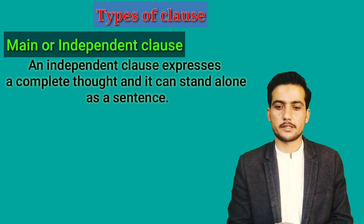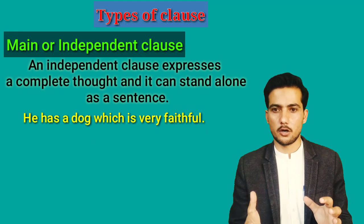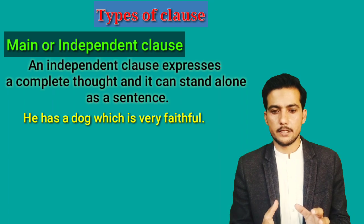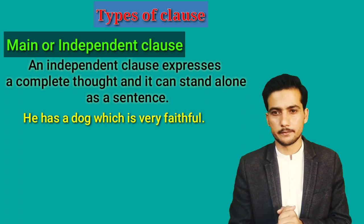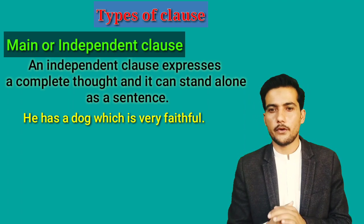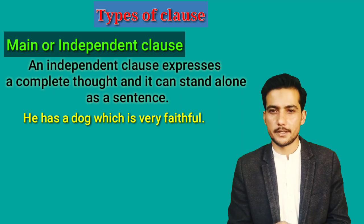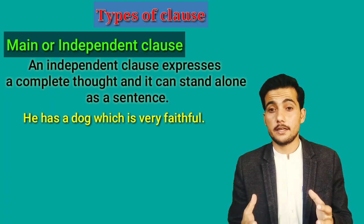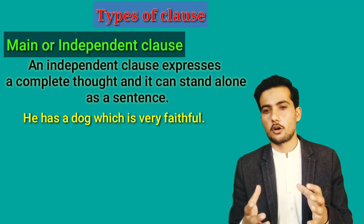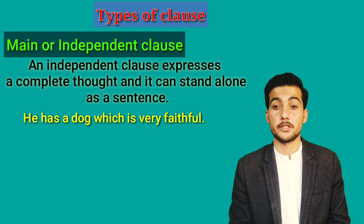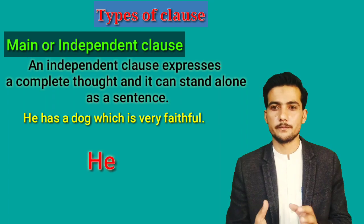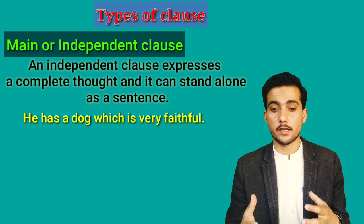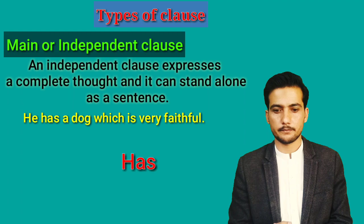For example: 'He has a dog which is very playful.' This sentence consists of two clauses. The first one, 'he has a dog,' is the main clause because it can stand alone as a sentence and gives complete sense. It also has a subject — 'he' — and a verb of its own — 'has.' That is why it is the main clause.